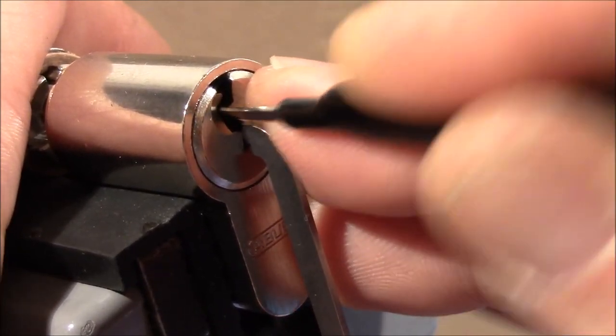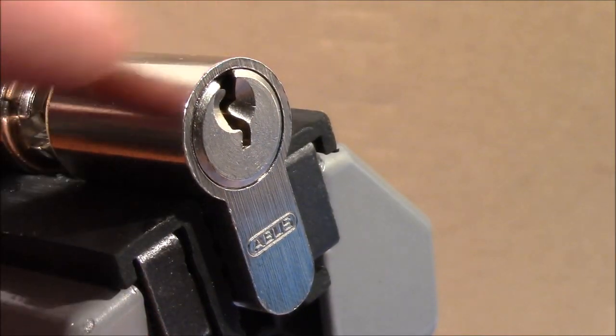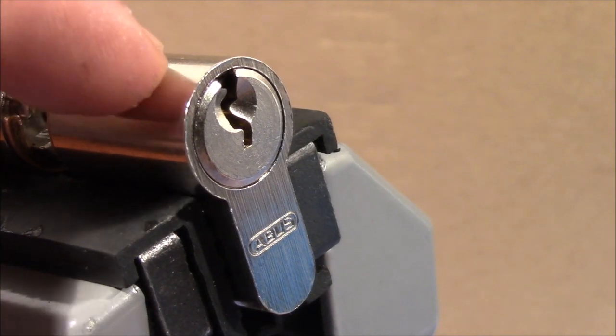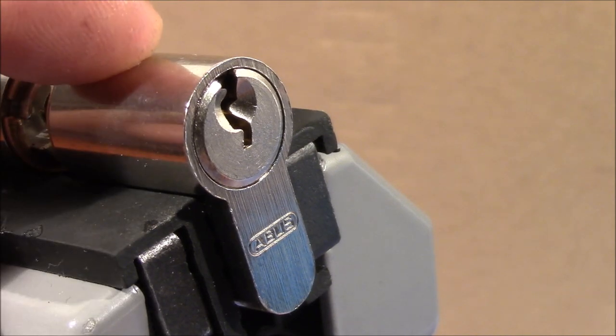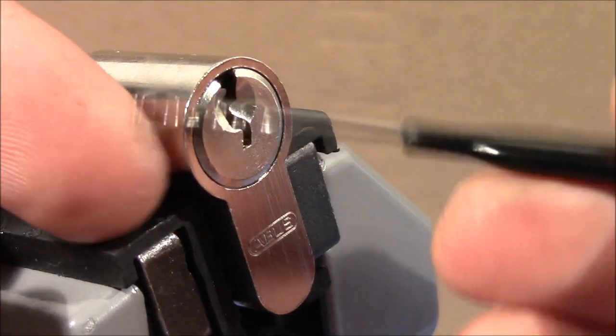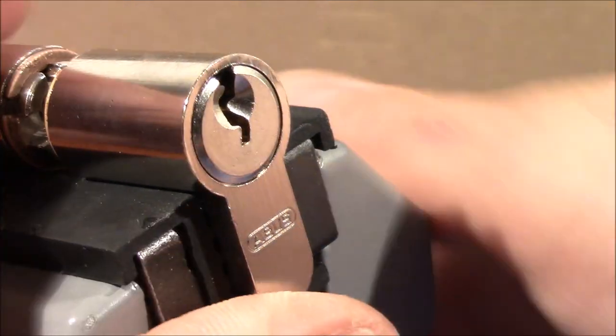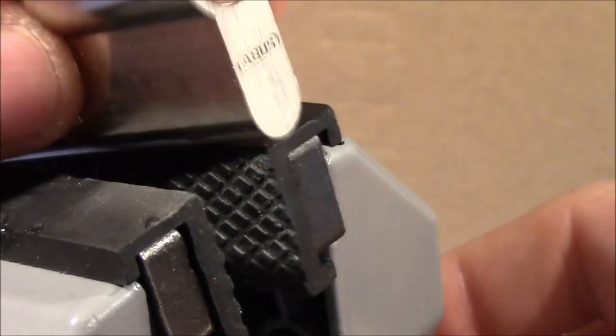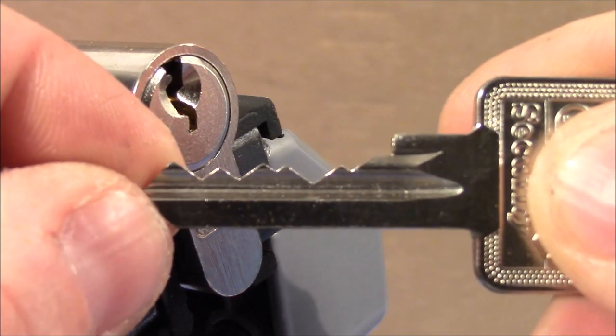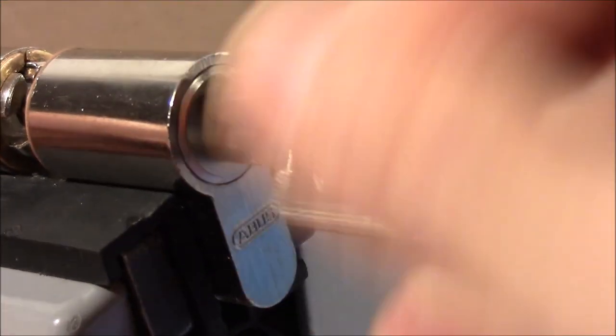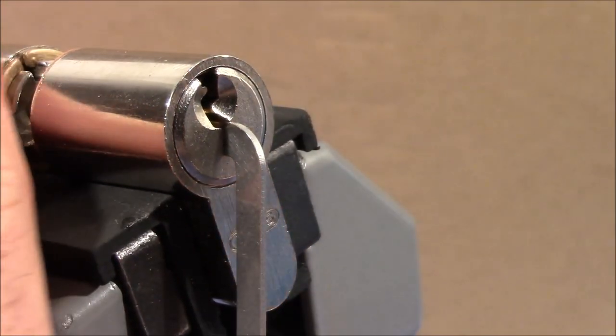So although the bitting is not really difficult, I would expect that the tolerances are that good that it's not easy to open an ABUS with a simple rocking attack like you have seen, because there are quite some cool security pins inside. But now let's try the other side where the bitting is more erratic. Looks like this.